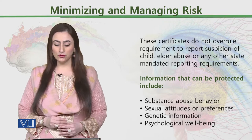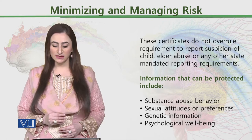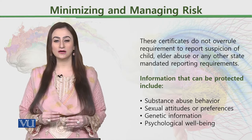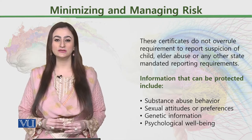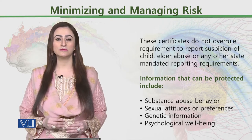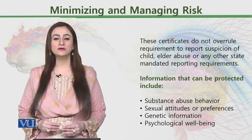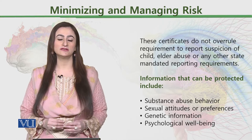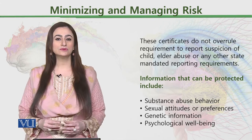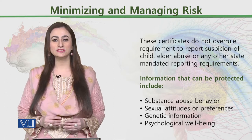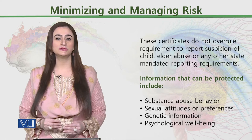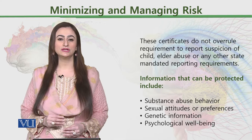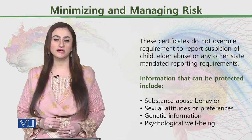These certificates do not overrule certain requirements — these requirements are to report suspicion of child or elder abuse, or any other state-mandated reporting requirements. Confidentiality को assure करना important है, लेकिन जब कोई abuse हो रहा हो — चाहे वो बच्चे पर हो, minor पर हो, woman पर हो, economical, social, psychological, या physical हो — तो confidentiality का certificate ensure करते हुए उन लोगों की security को threat पर नहीं लाना चाहिए। अगर एक researcher को लगे कि वो किसी को abuse से बचा सकता है और confidentiality का bond तोड़ सकता है, तो he or she is bound to do that।